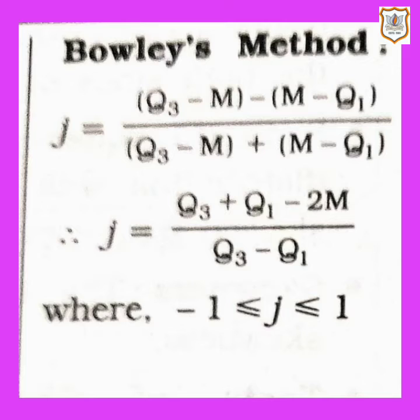The coefficient of skewness by Bowley's method is: J equals (Q3 minus M) minus (M minus Q1) upon (Q3 minus M) plus (M minus Q1), which simplifies to J equals (Q3 plus Q1 minus 2M) upon (Q3 minus Q1), where J is greater than or equal to -1 and less than or equal to +1. These are the formulas we will use to solve the sums.